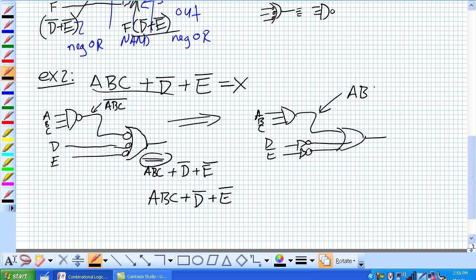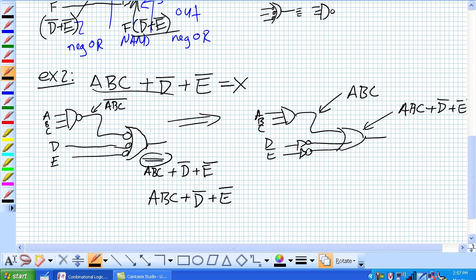A, B, C. What's coming into this thing right here? It's A, B, C OR NOT D OR NOT E. Not too hard.